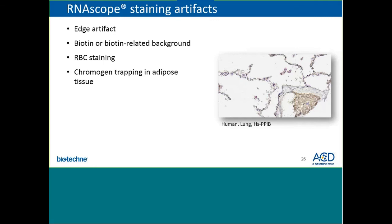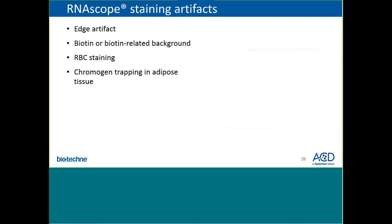The last artifact worth mentioning that you may encounter is red chromogen trapping in adipose tissue. This is not a true signal — the red chromogen will be very finely granular as opposed to the punctate signal seen with the true RNA signal.